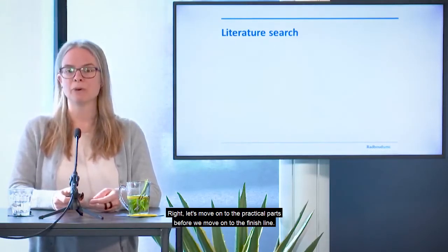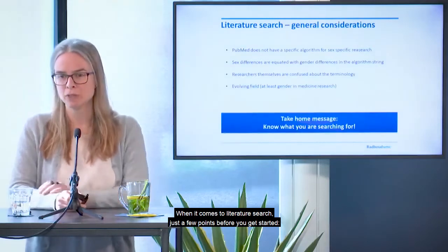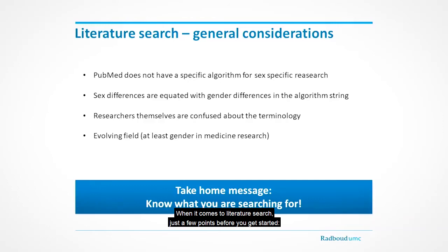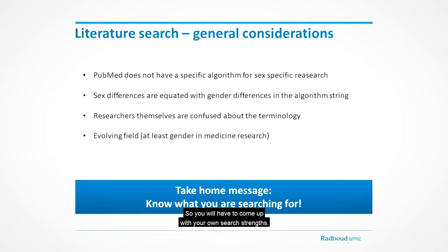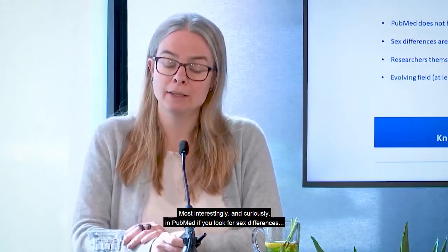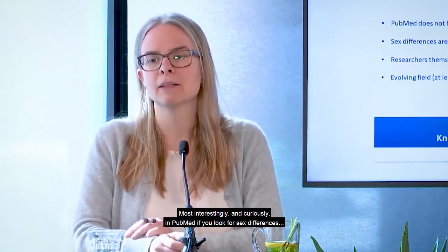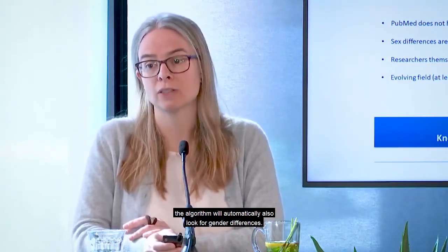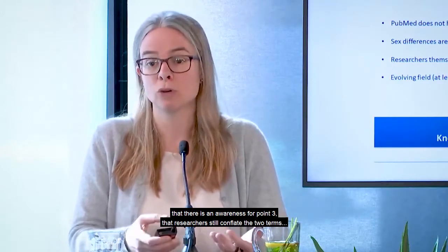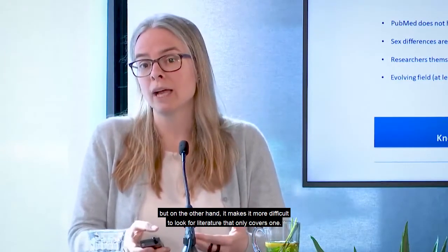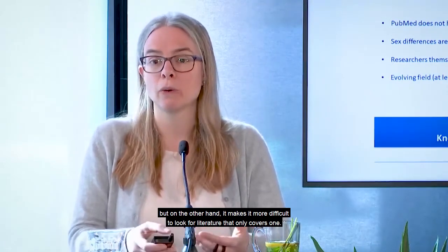When it comes to literature search, there is no specific algorithm in PubMed to look for sex-specific or gender-specific research beyond looking for sex and gender in the title and abstract, so you will have to come up with your own search strings. Interestingly, in PubMed, if you look for sex differences, the algorithm will automatically also look for gender differences — equating the two terms — which shows researchers still conflate them, but also makes it more difficult to look for literature covering only one or the other.